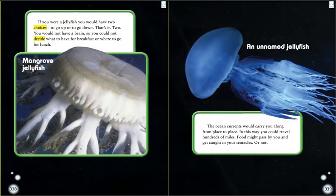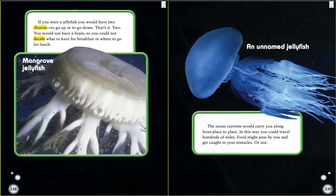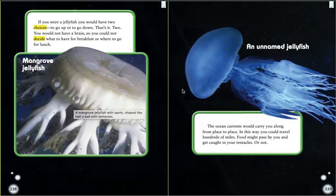If you were a jellyfish, you would have two choices: to go up or to go down. That's it — two. You would not have a brain, so you could not decide what to have for breakfast or where to go for lunch. The ocean currents would carry you along from place to place — in this way you could travel hundreds of miles. Food might pass by you and get caught in your tentacles, or not. Here's an example of a caption: this is a mangrove jellyfish, and this one is an unnamed jellyfish — they haven't given that jellyfish a name yet.